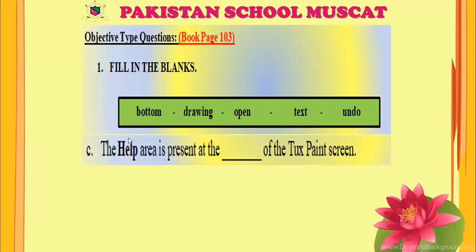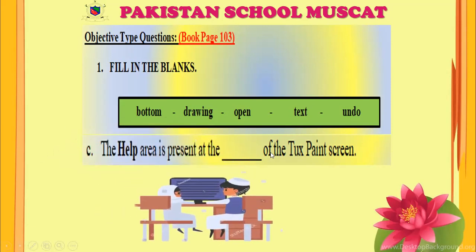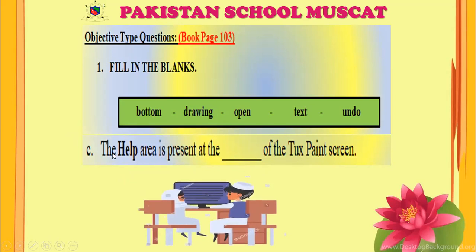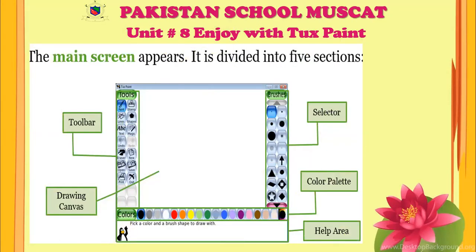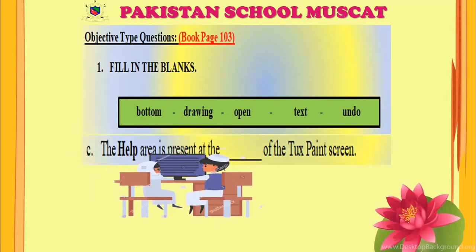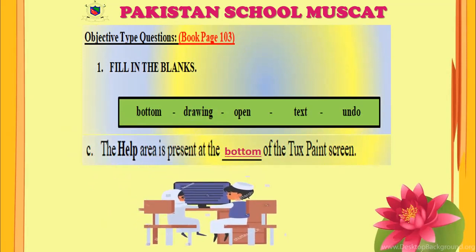Part C: The help area is present at the blank of the Tuxpaint screen. Let's check the Tuxpaint window. At the bottom side of your screen, where the penguin is, it gives you information about whichever tool you are selecting — this is the help area. The answer is: the help area is present at the bottom of the Tuxpaint screen.